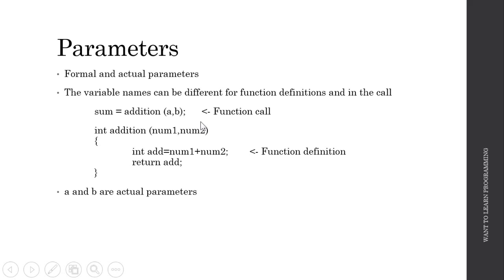So here we say that a and b are actual parameters. These are the parameters which are actually being passed from a parent function to a child function or from a calling function to a called function. And num1 and num2 are formal parameters. These are the parameters which are being used locally in the function.